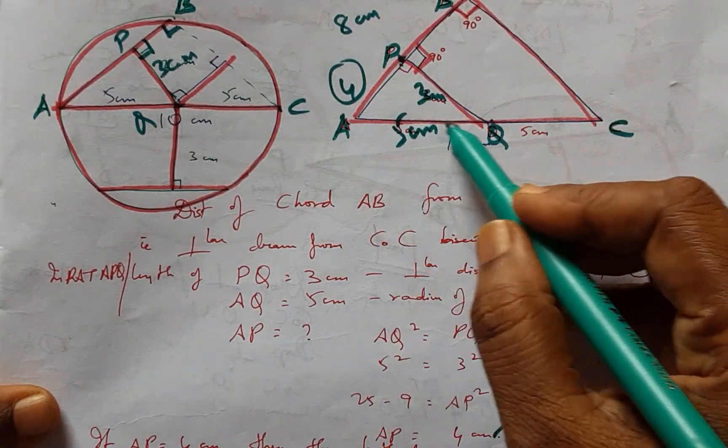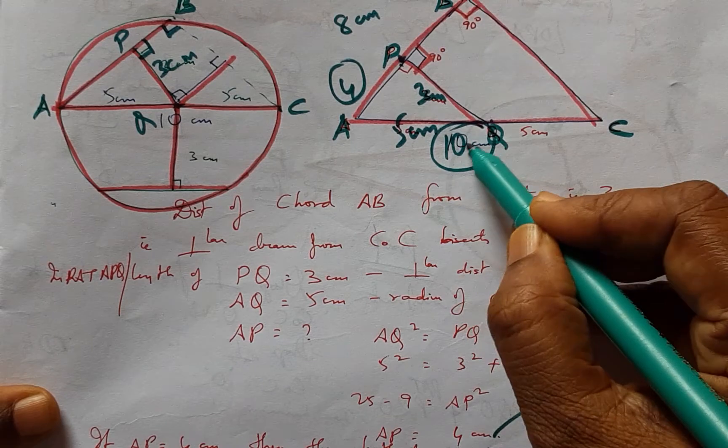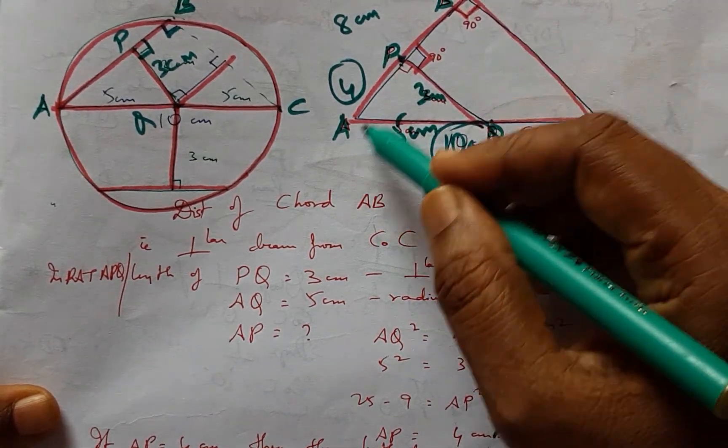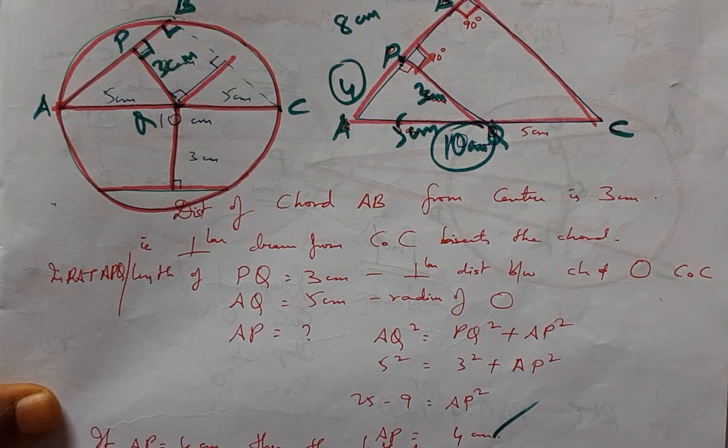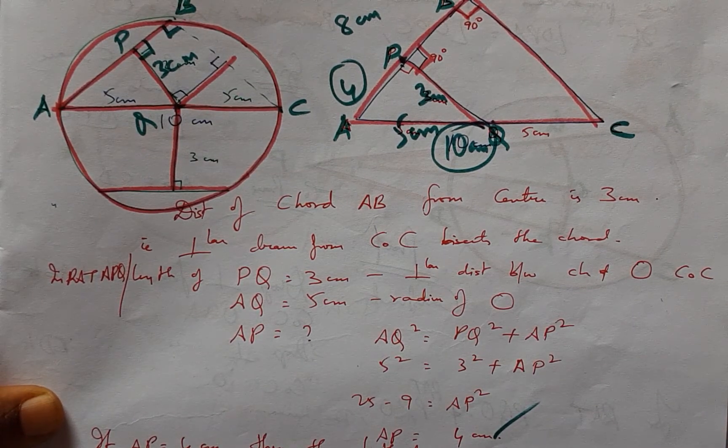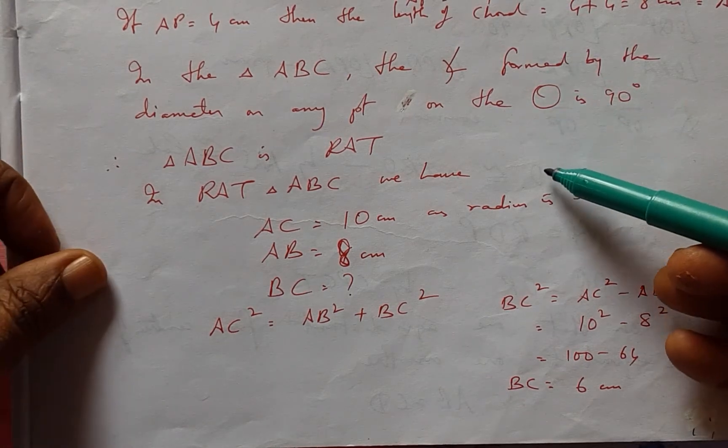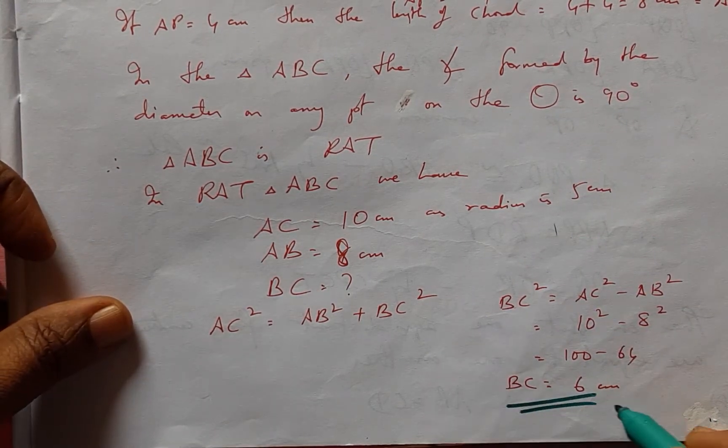Coming to the larger triangle, AC is given as 10 cm and we found that AB is 8 cm. Applying Pythagoras theorem, BC can be easily obtained, and the value of BC is 6 cm.